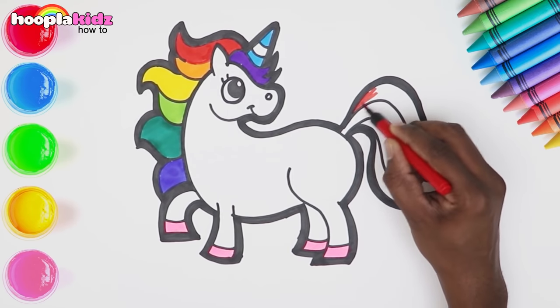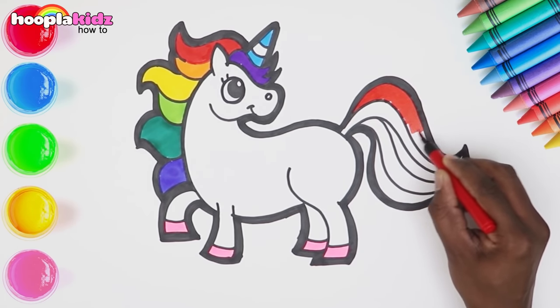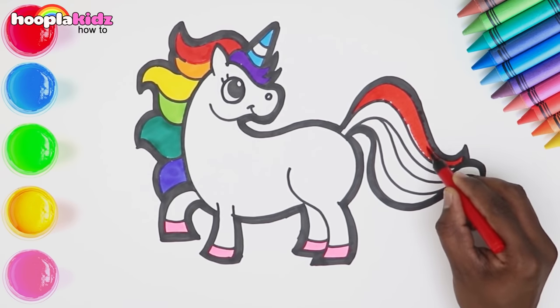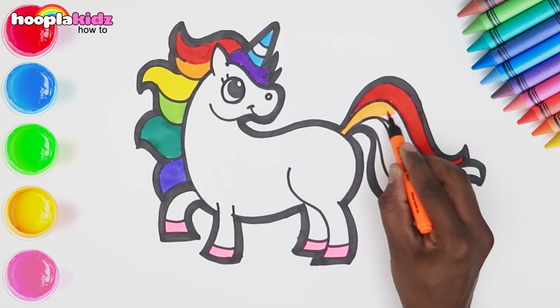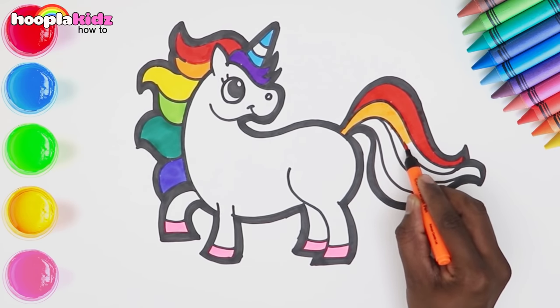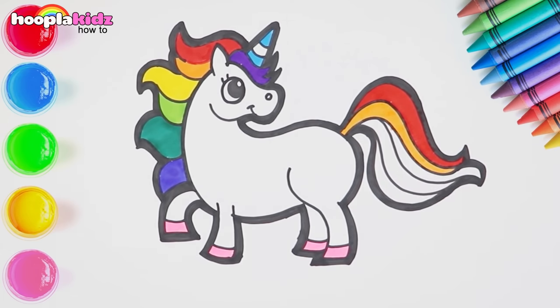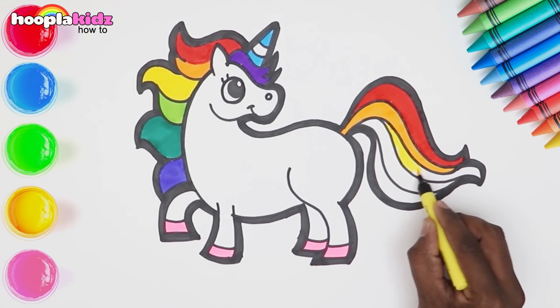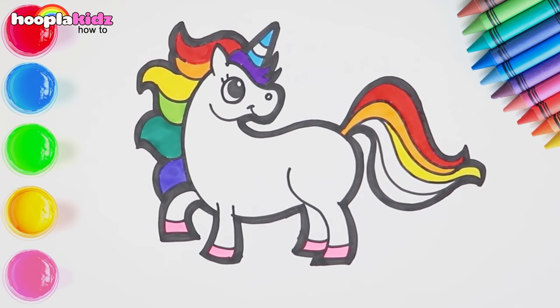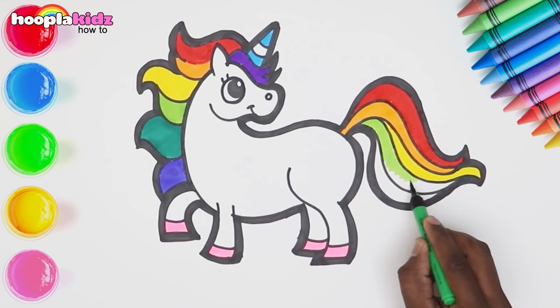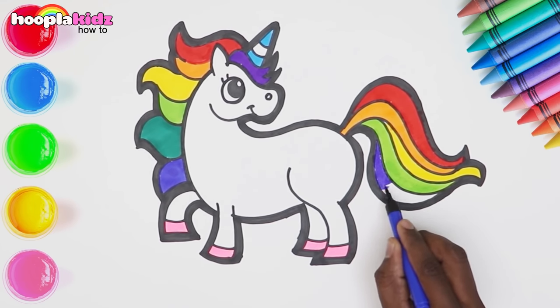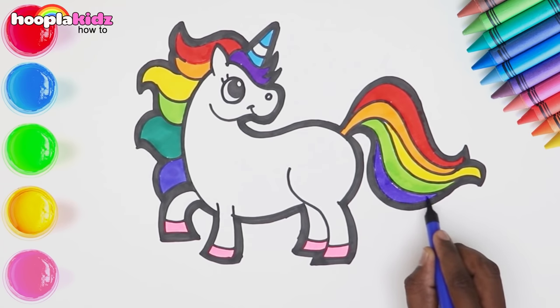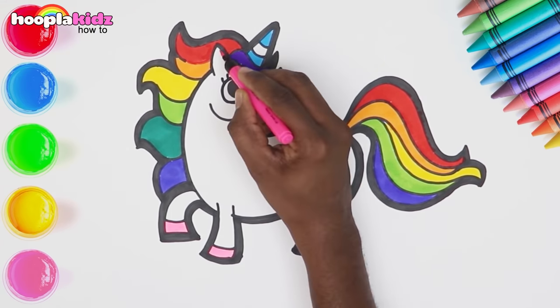Let's colour the tail now. Begin with the red, then some orange, yellow, blue, light green, and purple. Yippee! Add some finishing touches with a lovely pink.